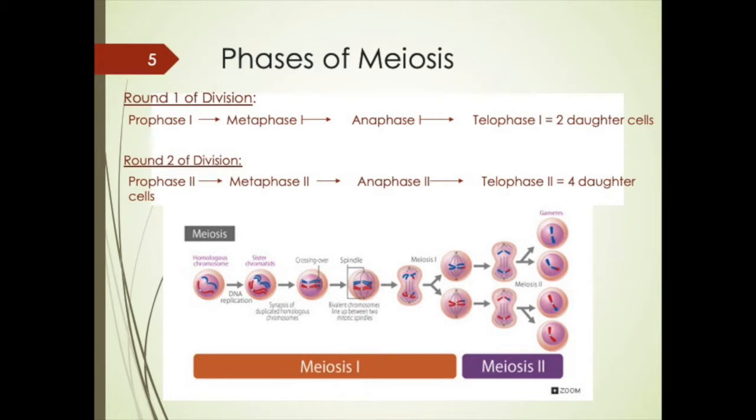We know the different rounds of division. We have prophase one, metaphase one, anaphase one, and telophase one — which produces two daughter cells. Then prophase two, metaphase two, anaphase two, and telophase two — which produces four daughter cells. By the end we have differing, non-identical DNA of haploid gametes.